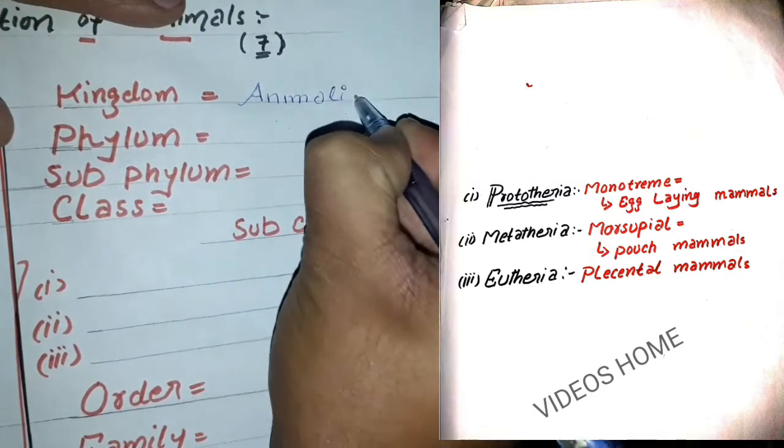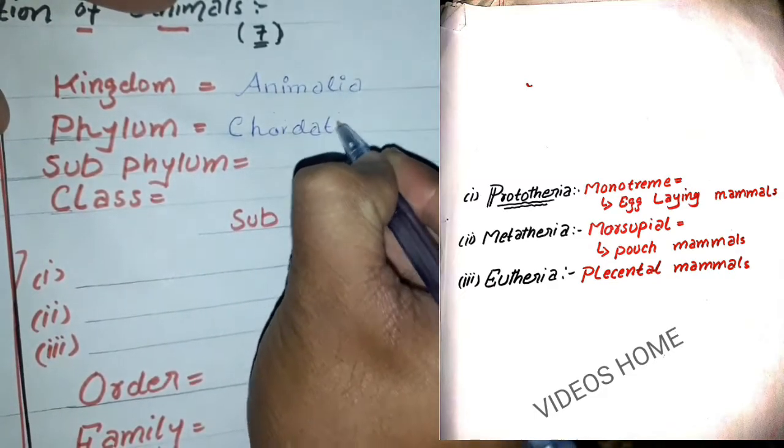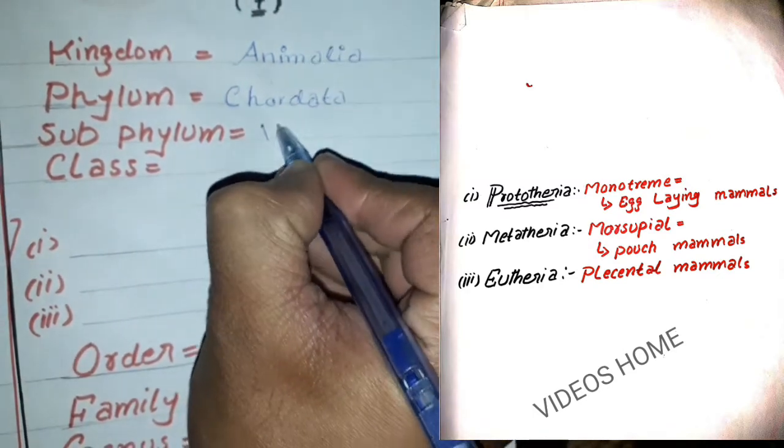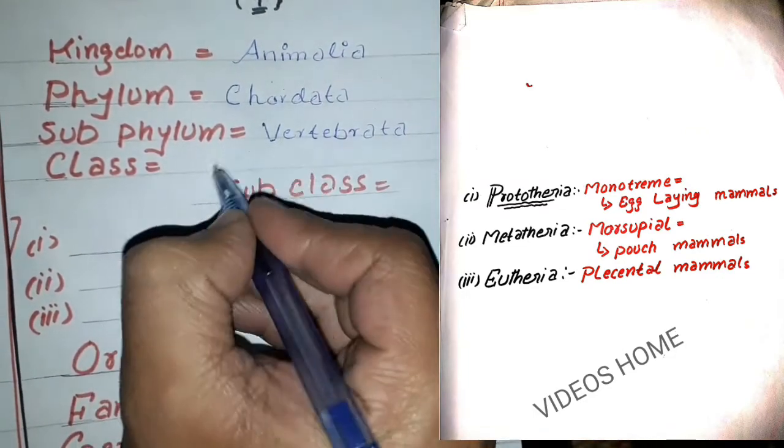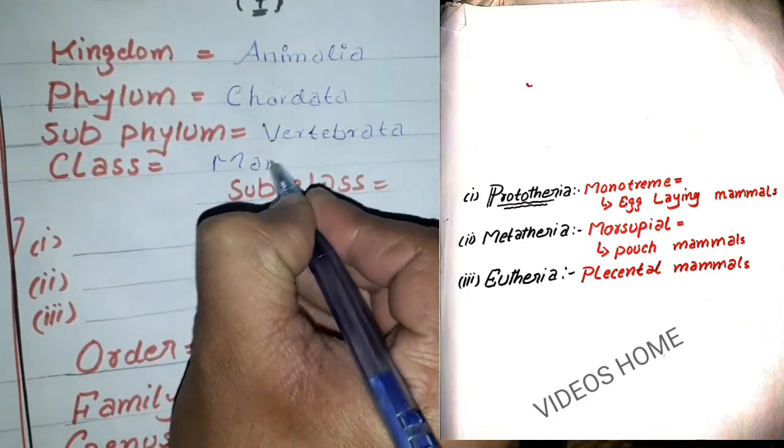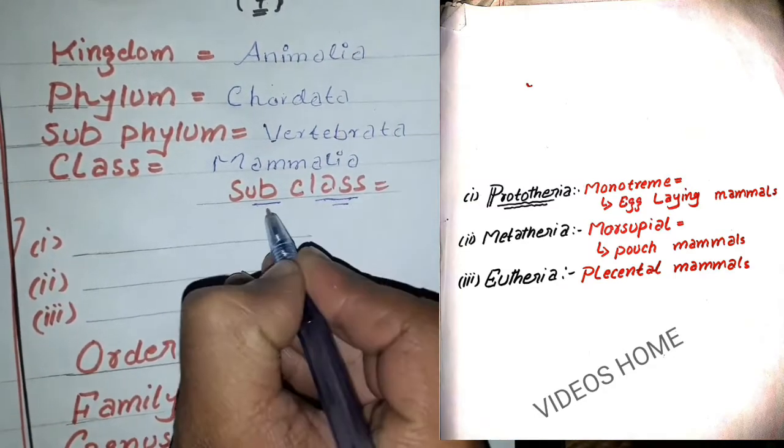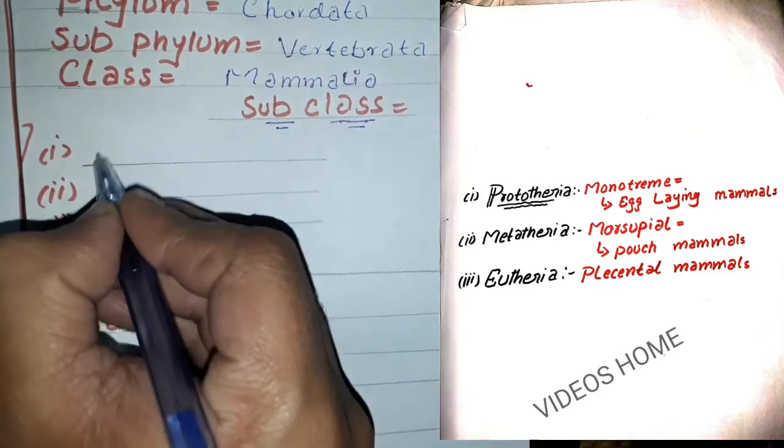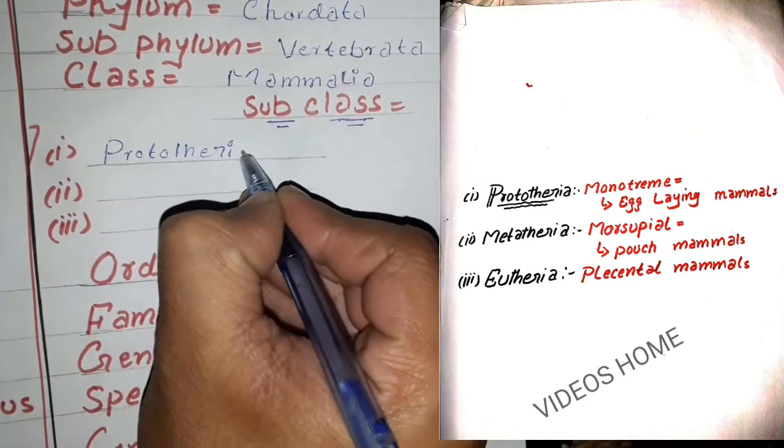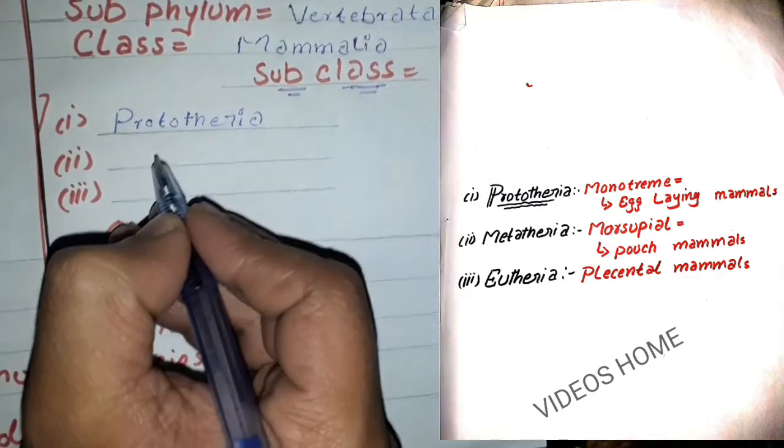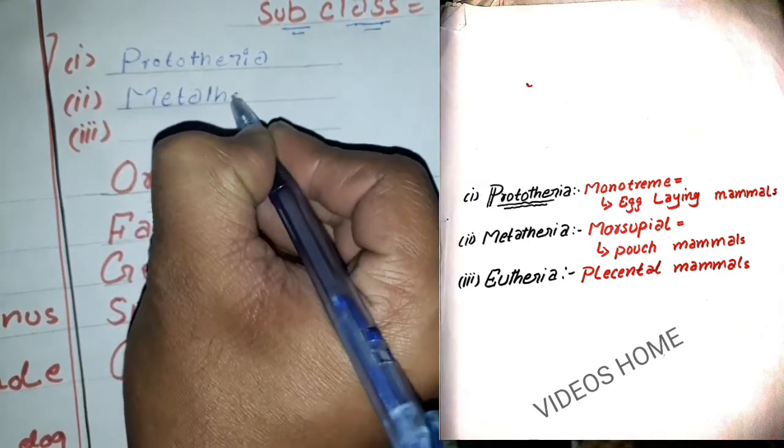Kingdom Animalia, Phylum Chordata, Subphylum Vertebrata, Class Mammalia. And here are three subclasses of Mammalia: first, Prototheria, also called monotremes - they are egg-laying mammals. The second, Metatheria, are also called